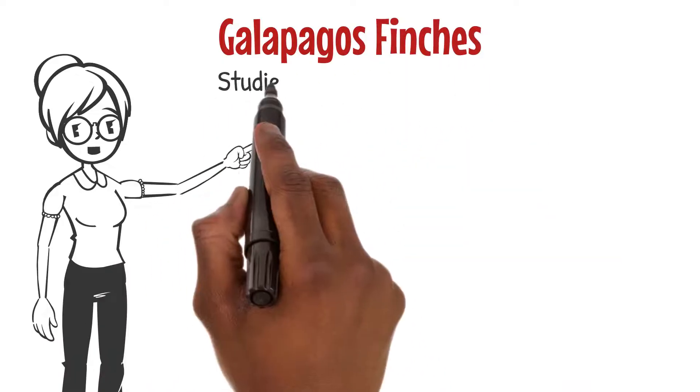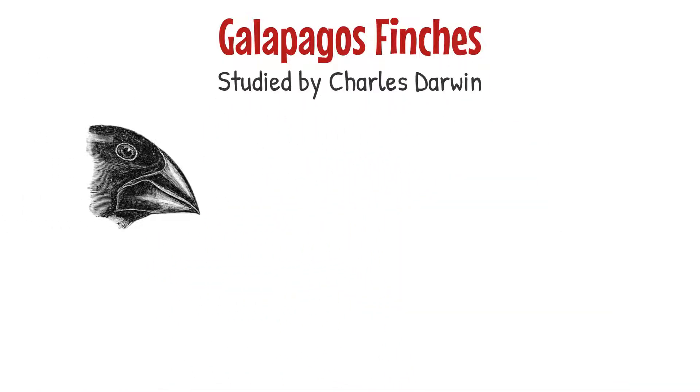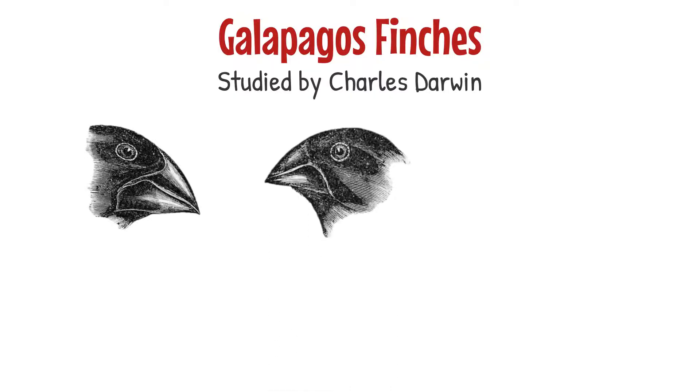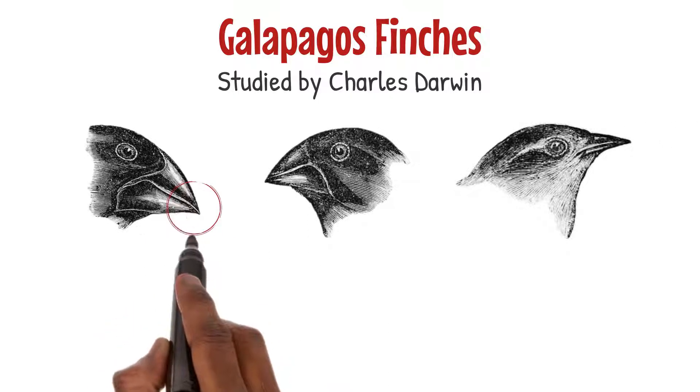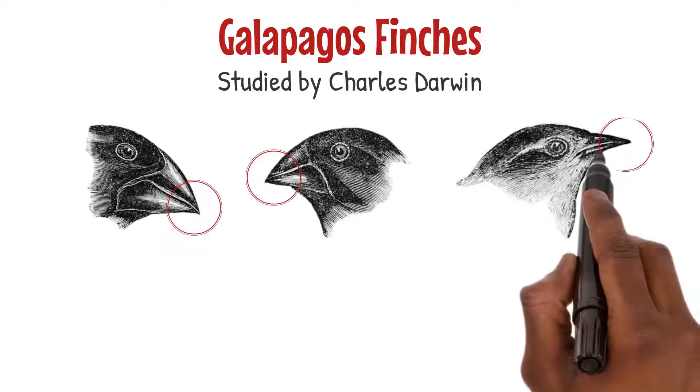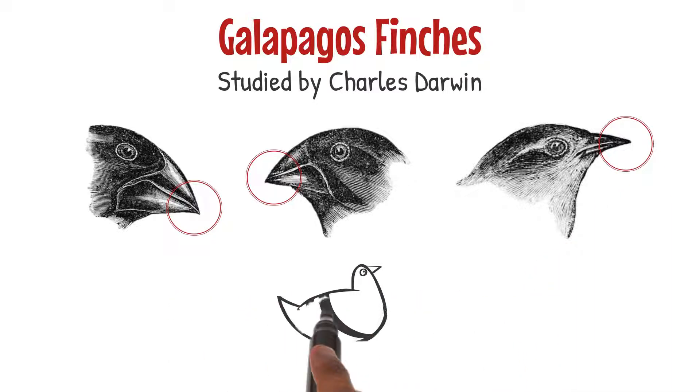One famous example is the Galapagos finches studied by Charles Darwin. These finches had different beak shapes depending on their food sources. Over time, these changes became so significant that they could no longer interbreed, resulting in the formation of new species—nature's creativity at its finest.